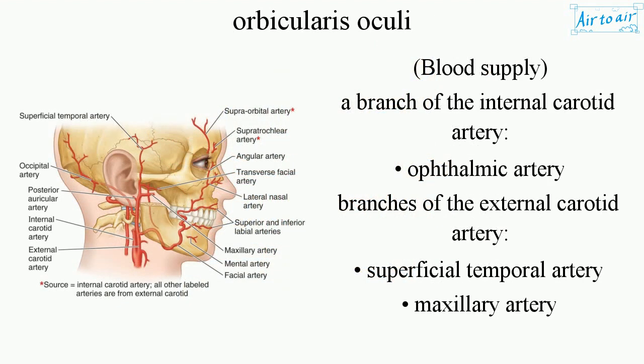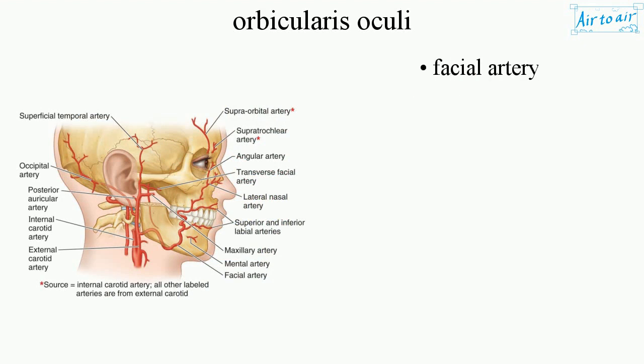Blood supply. A branch of the internal carotid artery: ophthalmic artery. Branches of the external carotid artery: superficial temporal artery, maxillary artery, and facial artery.